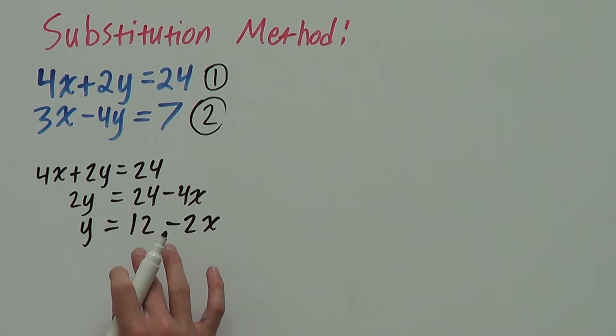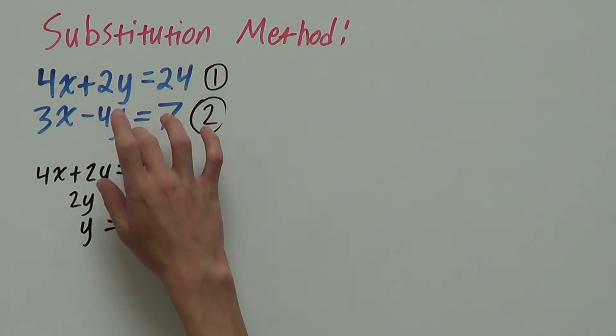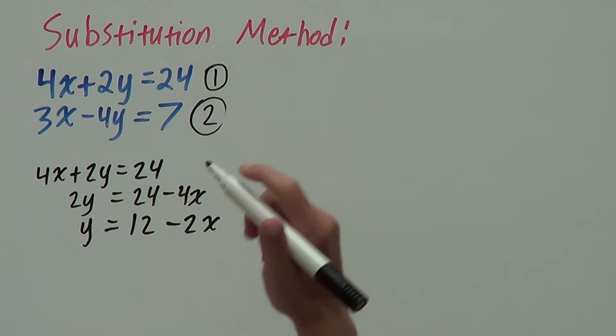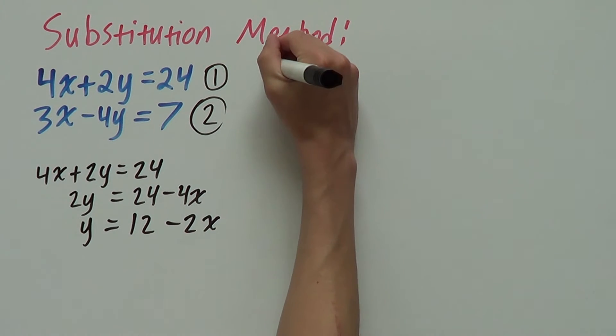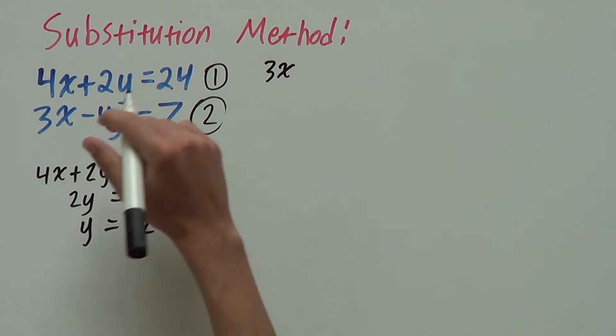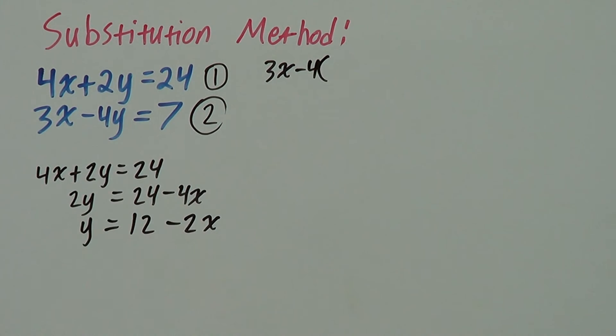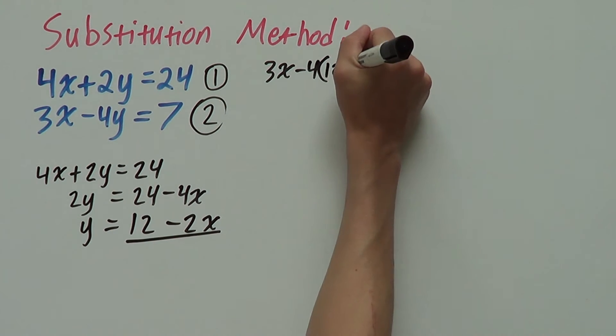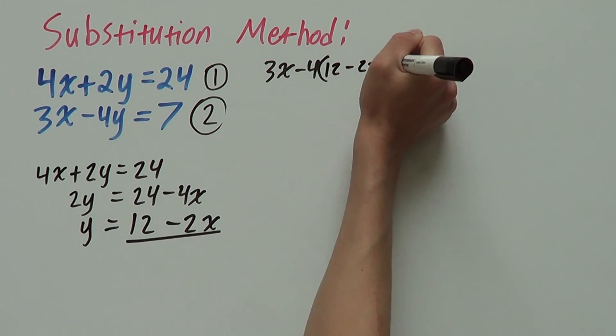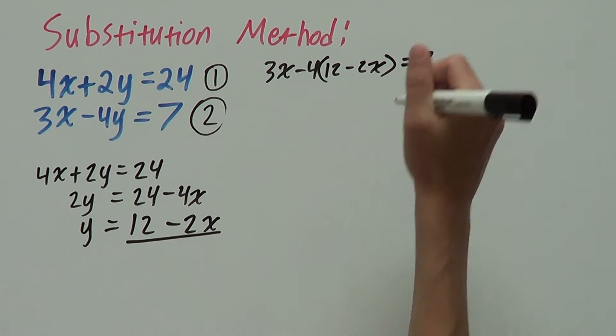Now, we have a value for y here. So, we are able to substitute it into our second equation. So, we have 3x minus 4 and now here's where y is. So, this is where we substitute our value of y. So, we write 12 minus 2x and we have equals 7.